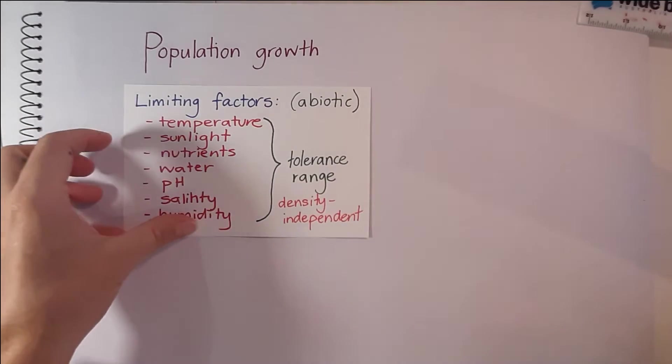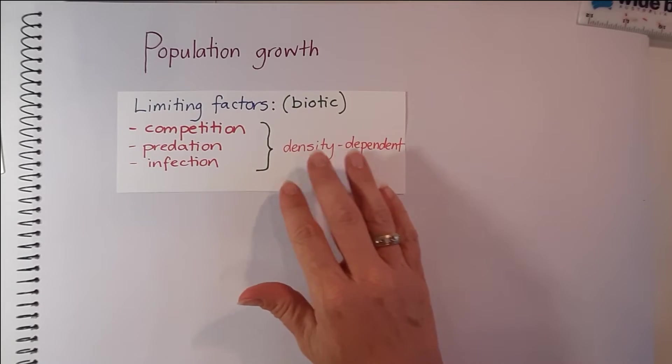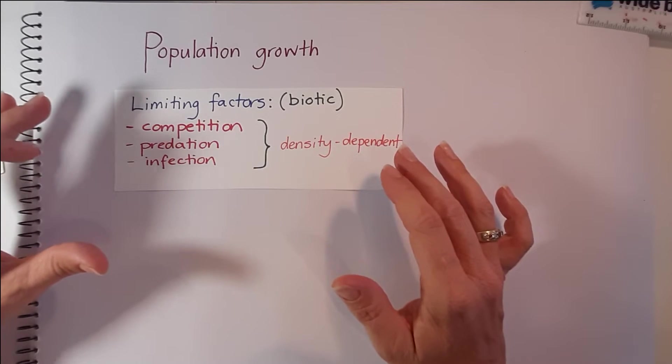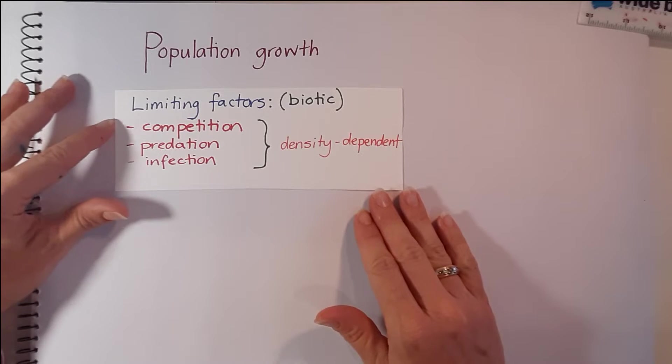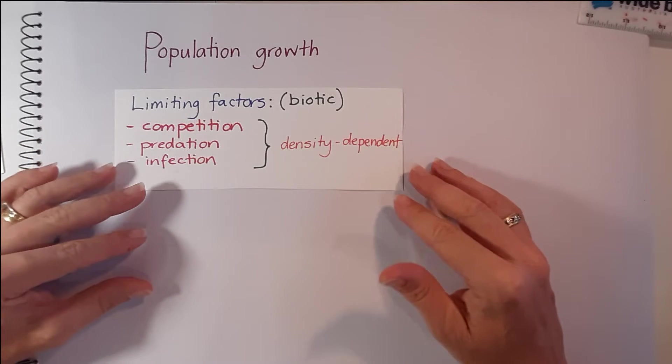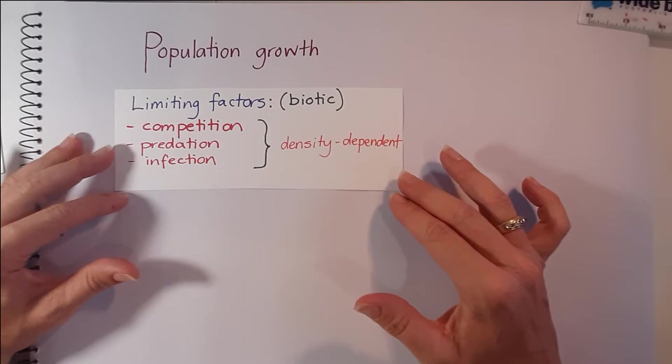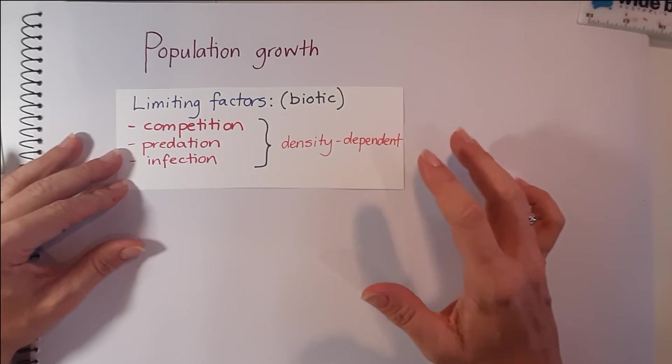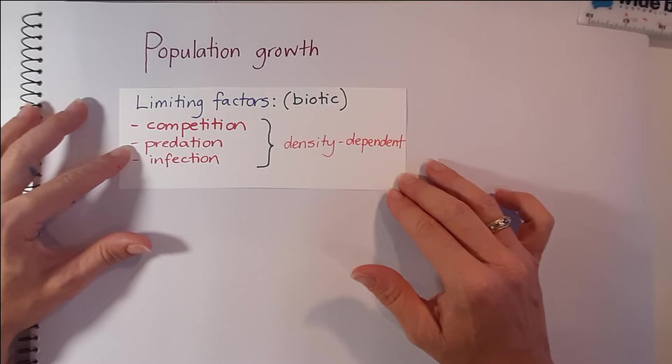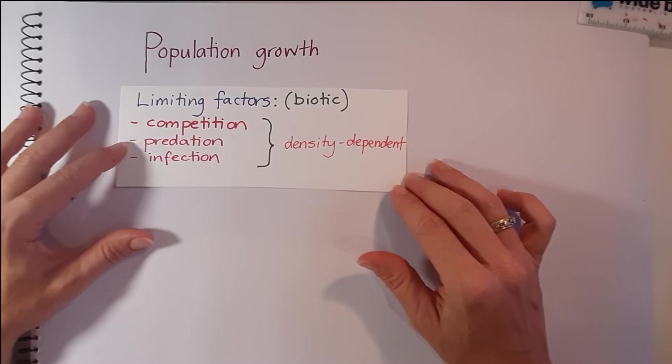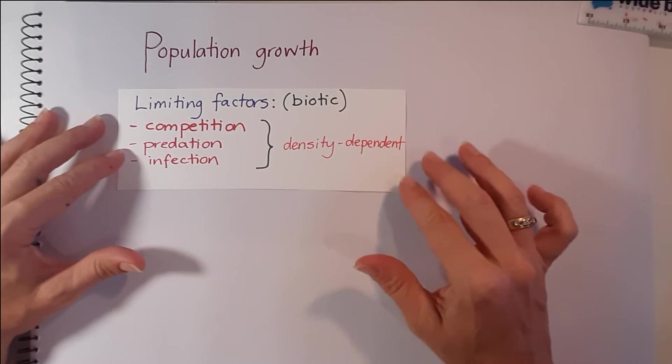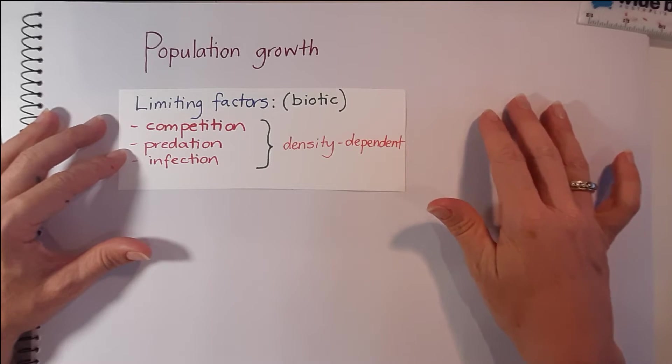In addition to the abiotic limiting factors, there are also biotic limiting factors or where other individuals can affect the size of another species population. So those factors include competition. So when members of different species are fighting over resources like food, water, shelter, that can have an effect on both populations size. Predation or predator-prey relationships are also a limiting factor that can affect the population of a certain species. So for example, if predator numbers were to increase, then we would expect the prey numbers to then decrease.